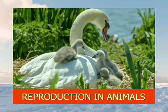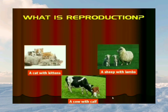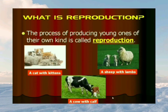Today we are going to learn about reproduction in animals. The process of producing young ones of their own kind is called reproduction. As you can see in the pictures — a cat with kittens, a sheep with lambs, a cow with calf — all these animals are producing young ones of their own kind, and this process is called reproduction.